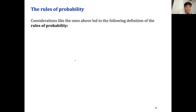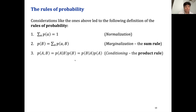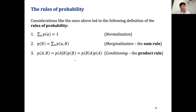The rules of probability are three. First, probabilities must add up to 1. Second, marginalization: if we want the probability of B alone, we sum the joint probabilities of B over all possible values of A. Third, conditioning — the product rule: the joint probability of A and B equals the conditional probability of A given B times the marginal probability of B, or equivalently the conditional probability of B given A times the marginal probability of A.